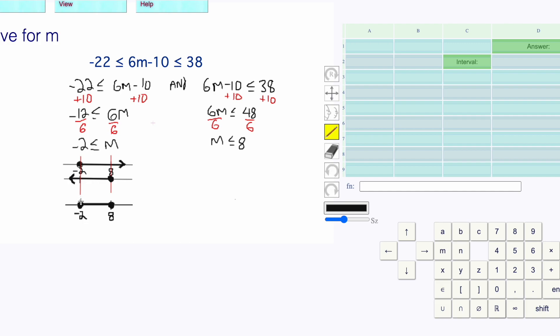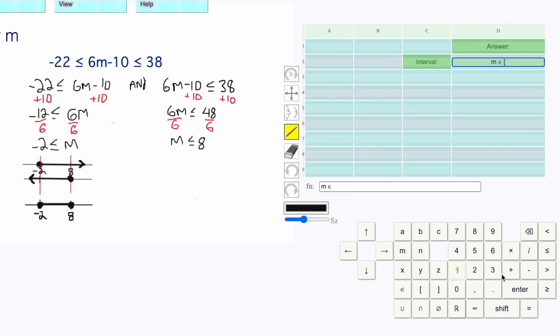That gives us everything from negative 2 to 8, including the negative 2 and the 8. m is a member of, bracket on the negative 2 to 8, bracket. Then press enter to see if you're right.